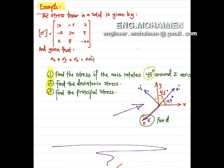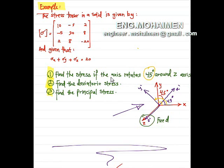Given that sigma x plus sigma y plus sigma z equals 20, the example is asking us to find the stress if the axis rotates 45 degrees around the z-axis, to find the deviatoric stress, and also the principal stress. We have the drawing here as shown — the axis rotates around the z-axis.